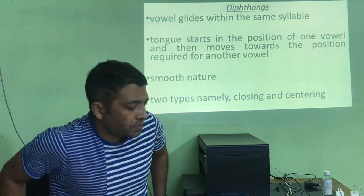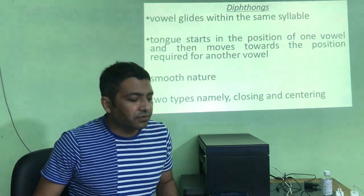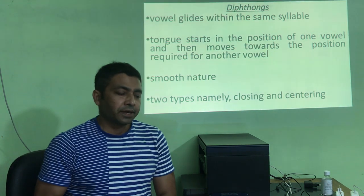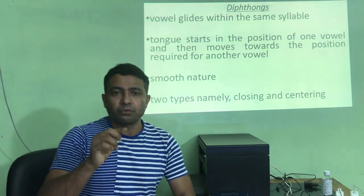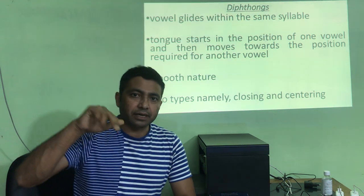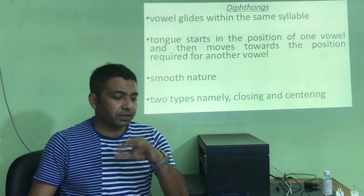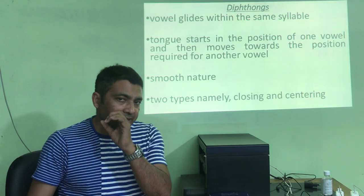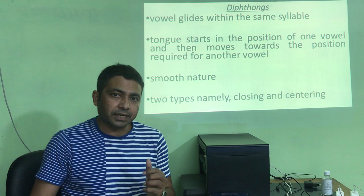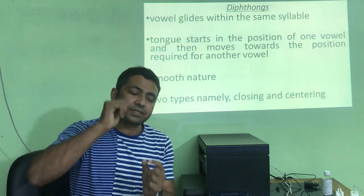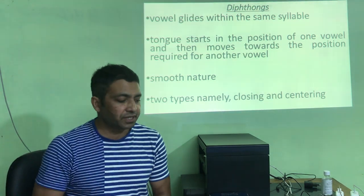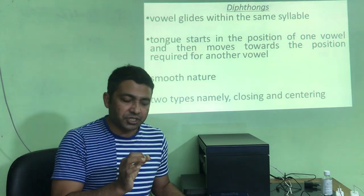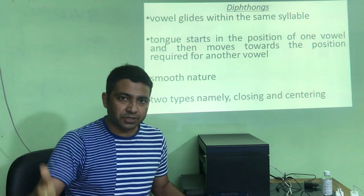Now let's come to diphthongs. Diphthongs are vowel glides within the same syllable. They are a kind of double vowel — from one vowel position to another. The glide is produced by the tongue or organs of speech, is very smooth, and must occur within the same syllable. During their pronunciation, the tongue starts in a particular position and ends in another position.